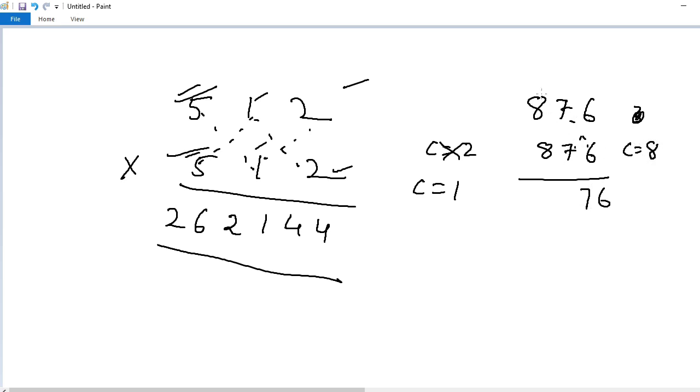Third step, very important step. 8 into 6, 48. 6 into 8, 48. So 48 plus 48, 96. 7 into 7, 49. 96 plus 49, 145. Here carry is 8. 145 plus 8, 153. So this is 3. Carry is equal to 15.